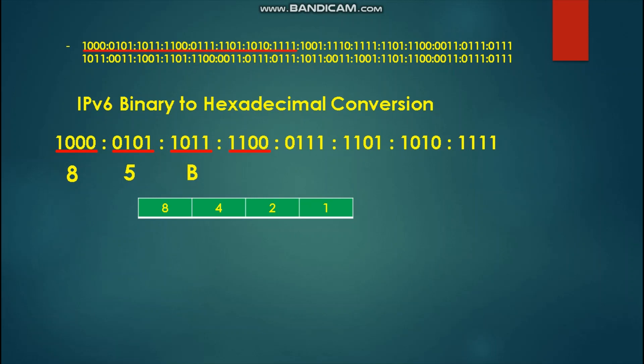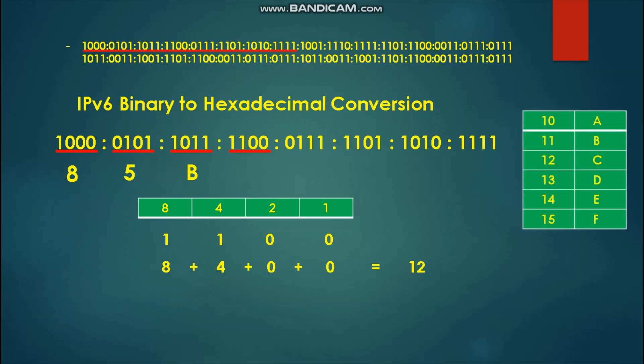Next, we solve for 1-1-0-0 and place it under our table. The values are 8 plus 4, equal to 12. Since 12 is two digits, we use our table to find the equivalent letter, which is the letter C. We place C as our hexadecimal result.